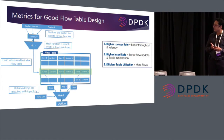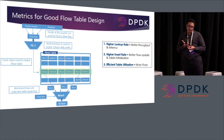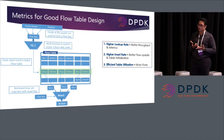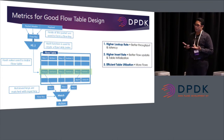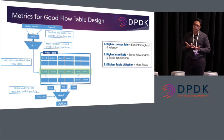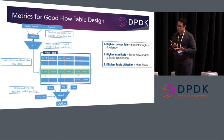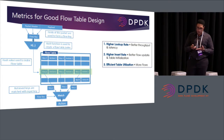The metrics for a good flow table design are three. The first and most important one is a higher lookup rate — you want to do the lookup very fast because this translates into better throughput. Second, you need a higher insert rate — you need to be able to update the flows in the table efficiently, especially during initialization. Third, you want efficient table utilization, which translates into supporting millions of flows being inserted into the flow table.